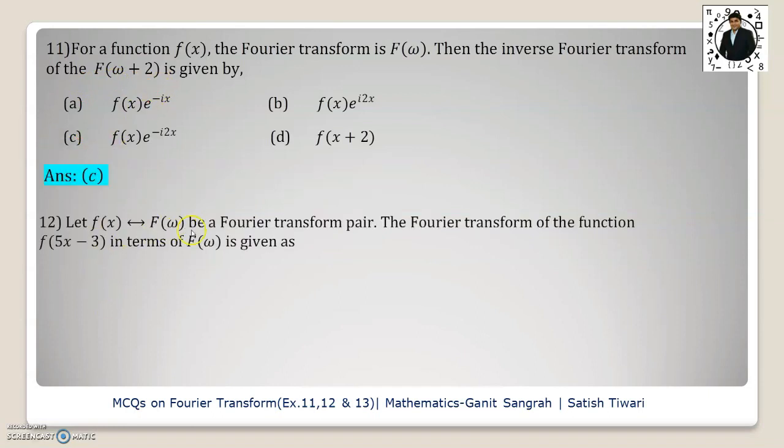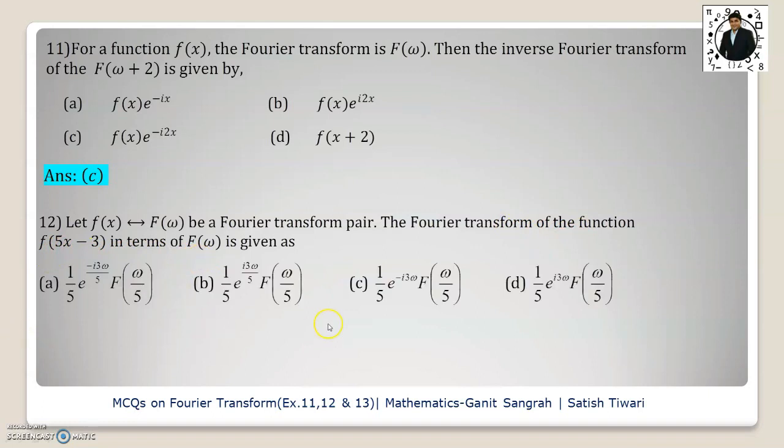Question 12: Let fx and f omega be the Fourier transform pair. The Fourier transform of the function f of 5x minus 3 in terms of f of omega is given by. The 4 options are here.